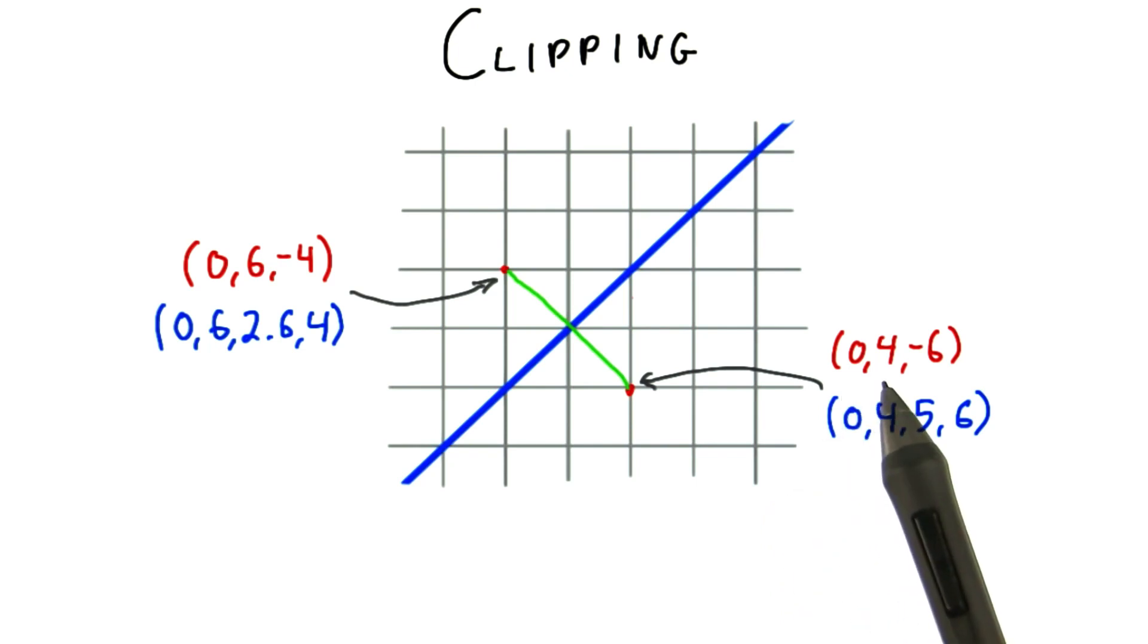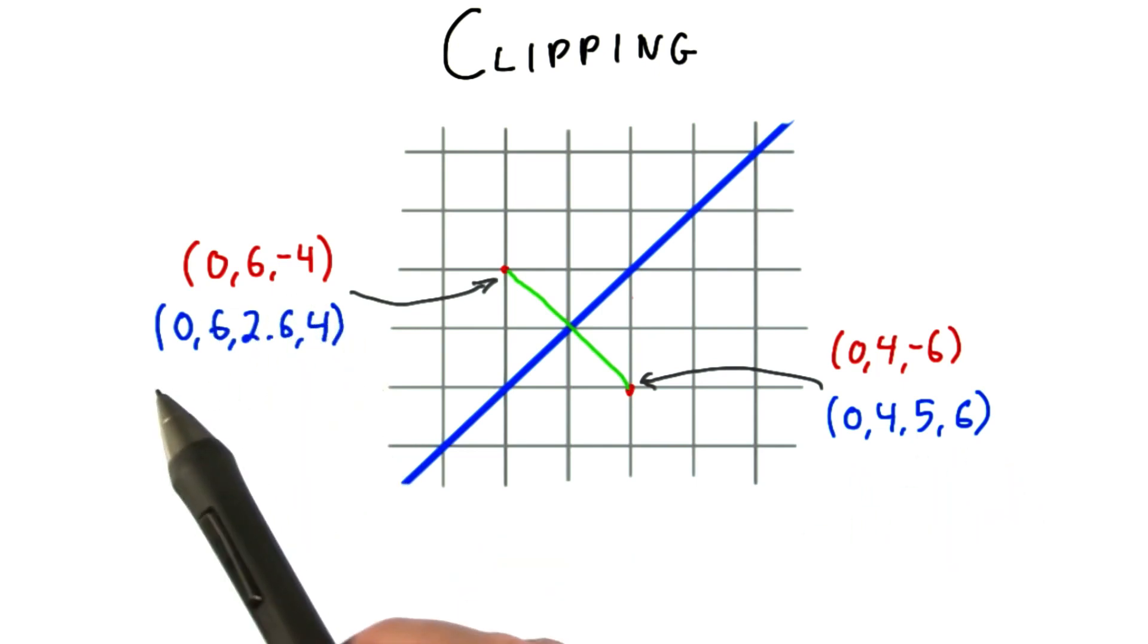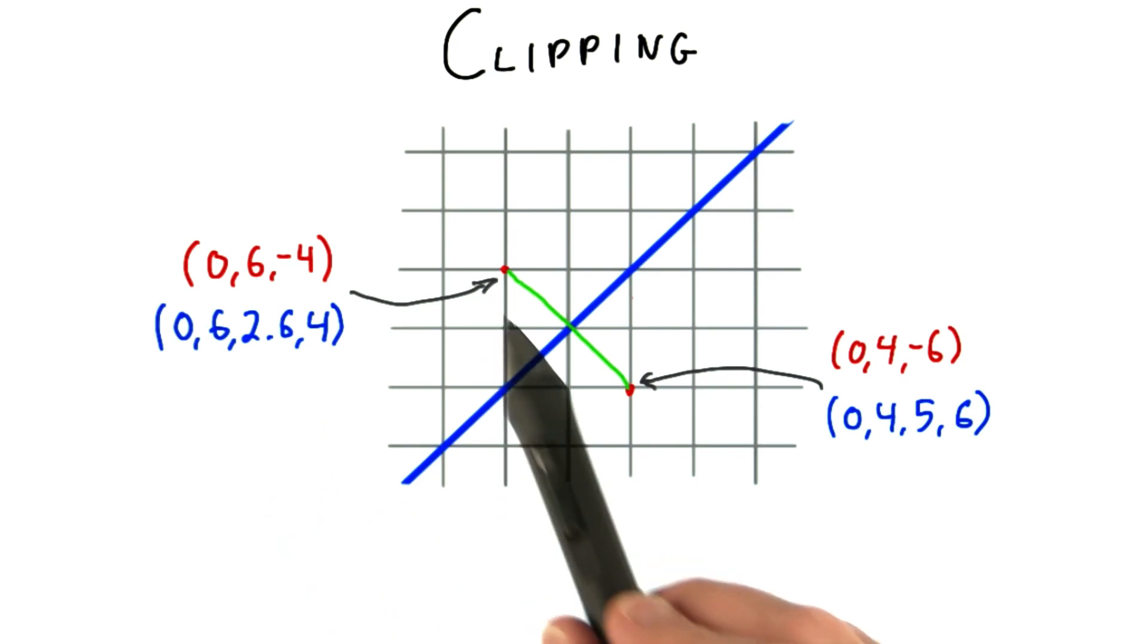Say we have two points, 0, 4, negative 6. After perspective transformation, that turns into 0, 4, 5, 6, and 0, 6, negative 4, which turns into this value. They form a line segment.